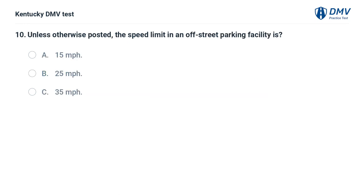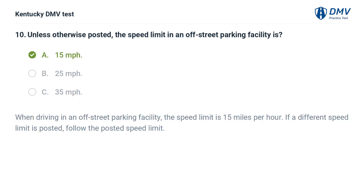Unless otherwise posted, the speed limit in an off-street parking facility is: A. 15 miles per hour. B. 25 miles per hour. C. 35 miles per hour. The correct answer is A, 15 miles per hour. When driving in an off-street parking facility, the speed limit is 15 miles per hour. If a different speed limit is posted, follow the posted speed limit.